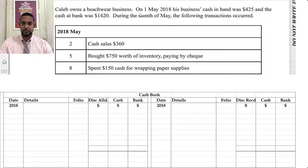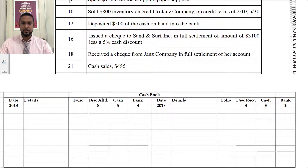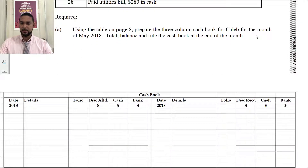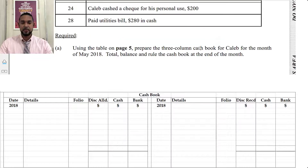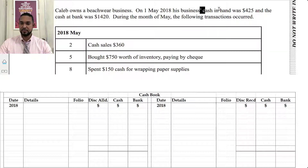So we're going to take a read. It says here that Caleb owns a beachwear business. On the 1st of May 2018, his business's cash in hand was $425 and the cash at bank was $1,420. During the month of May, the following transactions occurred. We're going to take a scroll down to see what we have to do. We have to do a three-column cash book for Caleb for the month of May 2018, and total, balance, and rule the cash book at the end of the month.